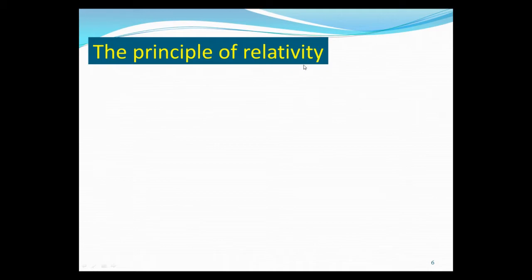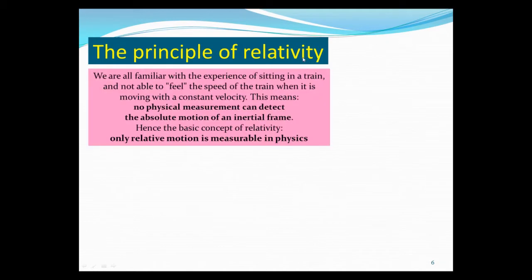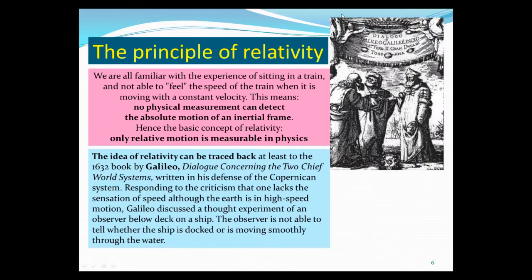So, let's talk about the principle of relativity. We're all familiar with the experience of sitting in a train, or better, sitting in an airplane, not being able to feel the speed of the train or the plane when it's moving with constant velocities. This means no physical measurement can detect absolute motion of the inertial frame. There's nothing you can do. The physics laws wouldn't allow you to detect absolute motion. So therefore, the basic concept of relativity is that only relative motion is measurable in physics.